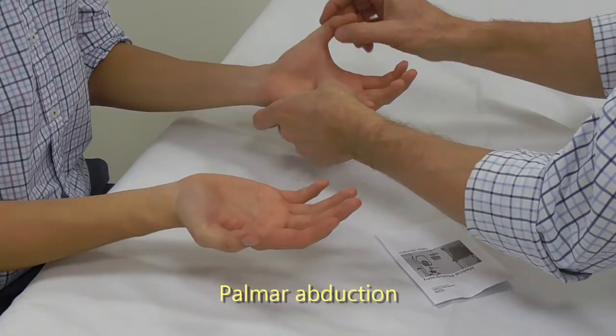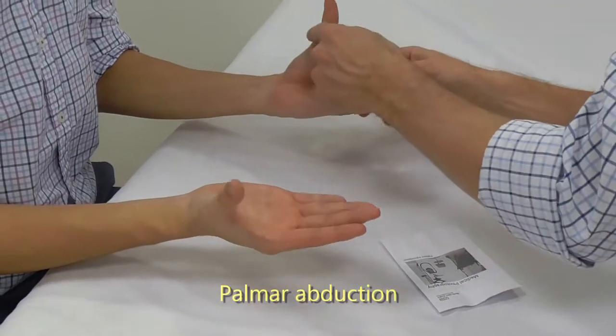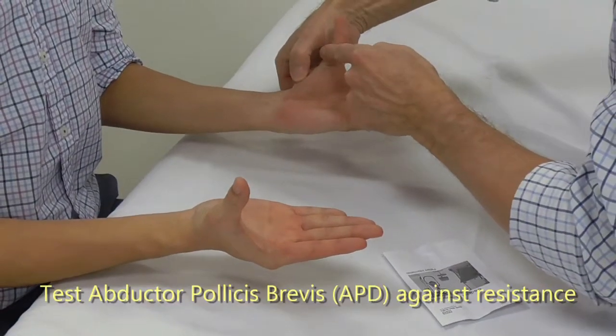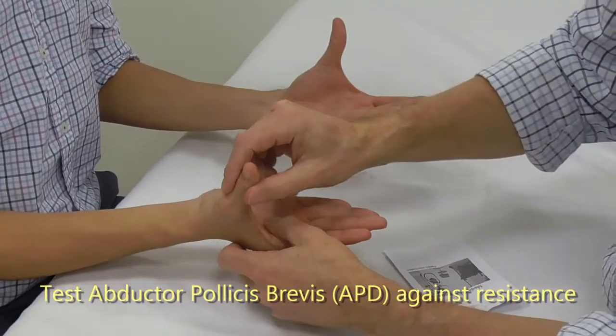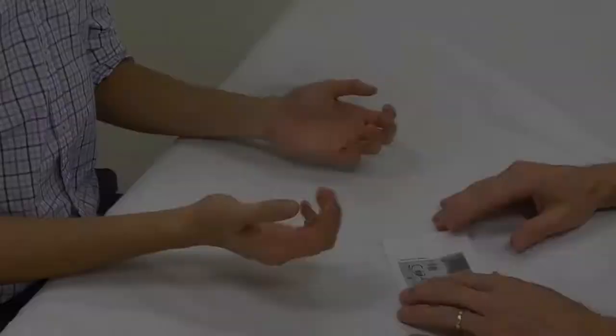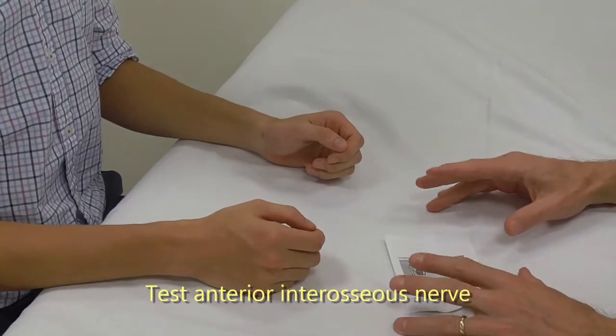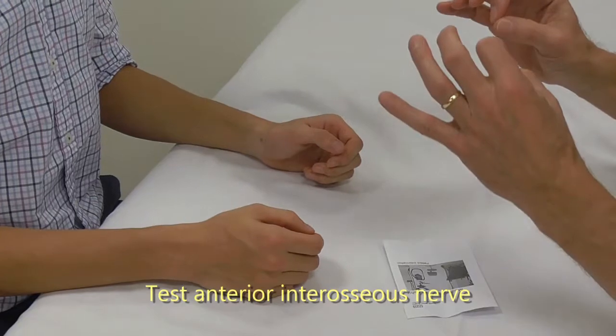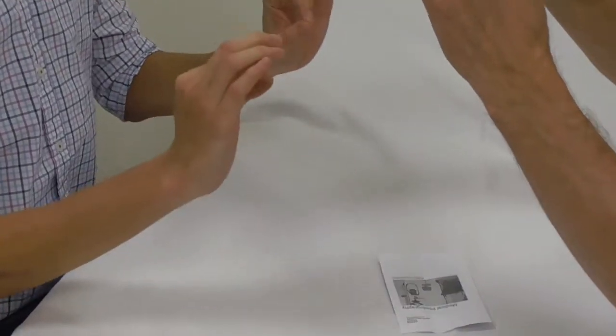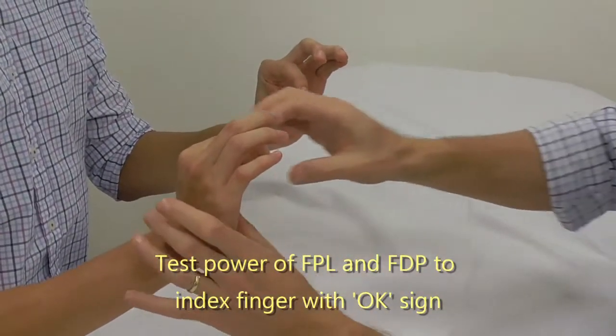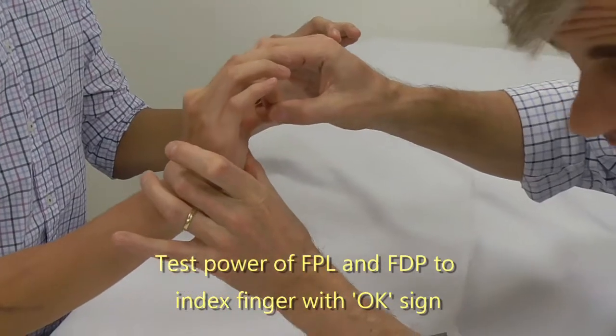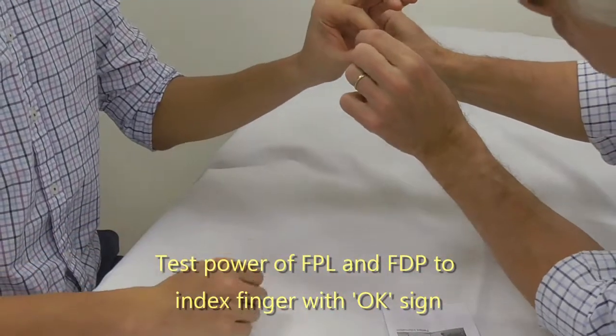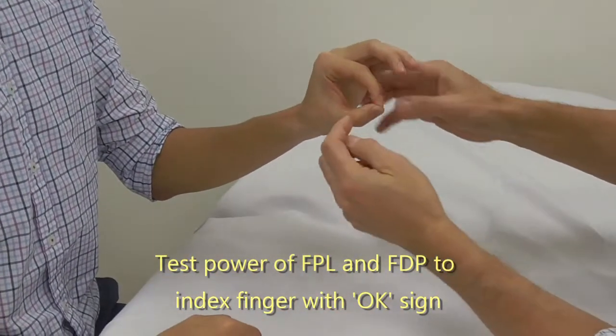So if you bring your thumb up into abduction, so palmar abduction, and we're just going to test the muscle against resistance. Always put it into the position and then test it against resistance. And then we're going to test the anterior interosseous nerve-specific components, and this is the OK sign, so I'll put it into that, and I'm going to see if I can break the ring. And this side, and this is testing the power of the FPL and the FDP to the index finger.